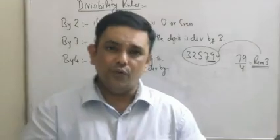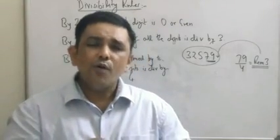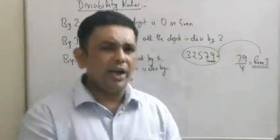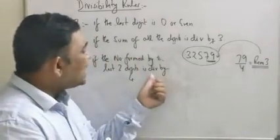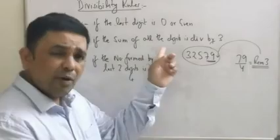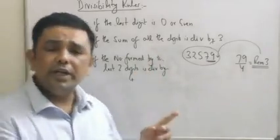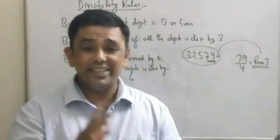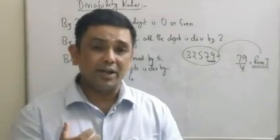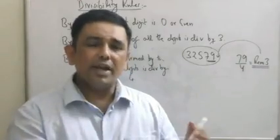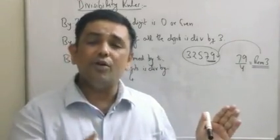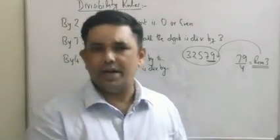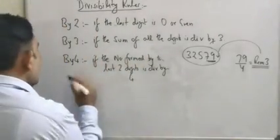Now I have a task for all of you — something absolutely interesting. I want you to find out: why is the divisibility rule of three based on the sum of the digits? And why is the divisibility rule of four based on the number formed by the last two digits? You can send me a message or a WhatsApp. I want you to look at this and try to understand — it will be very interesting.